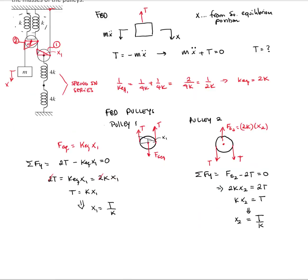The total displacement, as you see, here I move 2x1, here I move 2x2. So it will be 2x1 plus 2x2. And I already found that x1 is T over k and x2 is also T over k. So I can write that x is equal to 4T over k. Therefore, T is equal to xk over 4.